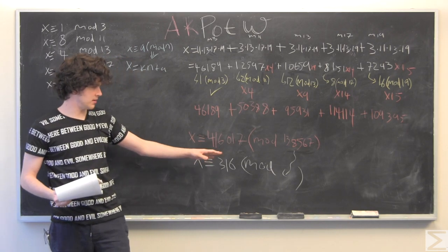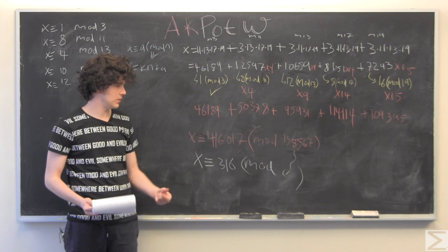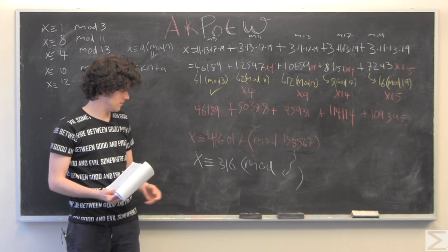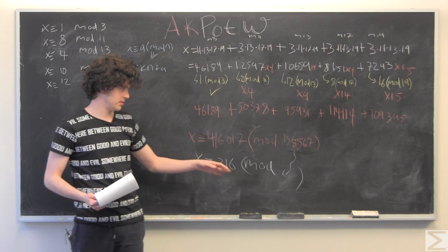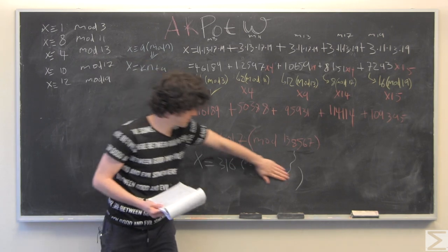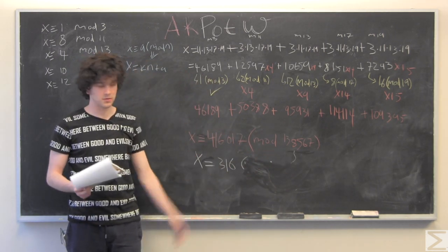So, coming down until you get something that's within our bound is X is equal to 316. X actually is congruent to 316 modulo that, but since we're just looking for that one number that fits all of our criterion, X is equal to 316.